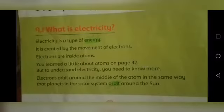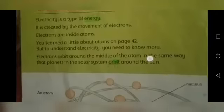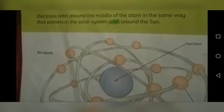ہم اس کے بارے میں پہلے پڑھ چکے ہیں، لیکن وہ کہہ رہے ہیں کہ ہمیں اس کے بارے میں مزید جاننا ہے اس unit میں. Electrons orbit around the middle of the atom in the same way that planets in the solar system orbit around the sun.